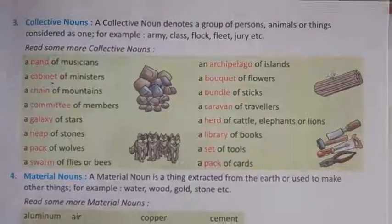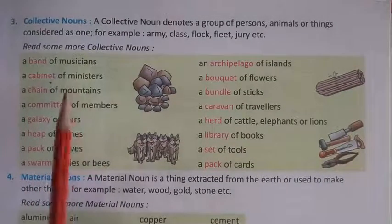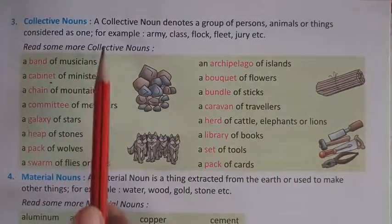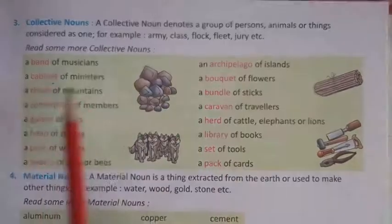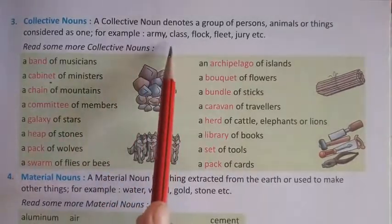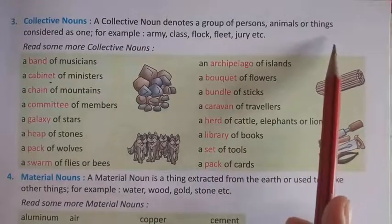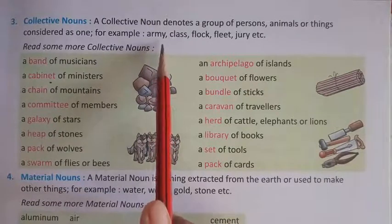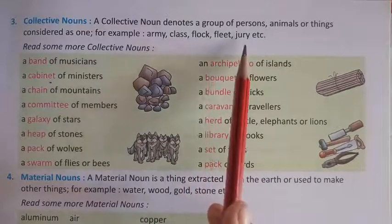Third is a Collective Noun — समुदायवाचक संज्ञा. A collective noun denotes a group of persons, animals, or things considered as one. For example: army, class, flock, fleet, jury, etc. So collective noun denotes किसी person की group को, animal की group को, या फिर किसी things की group को. Army उस army की group को denote करता है; class उस group को denote करता है; flock, fleet, jury, etc.